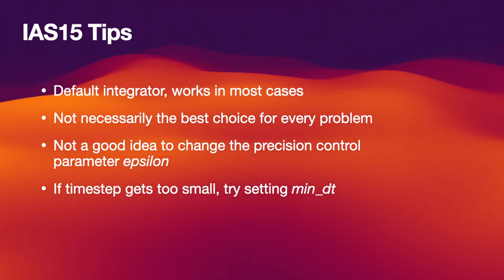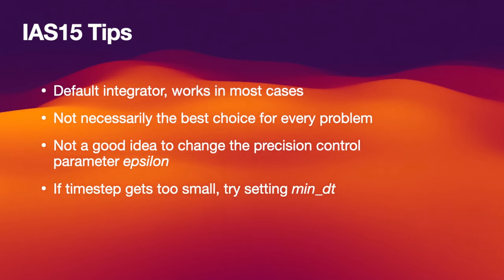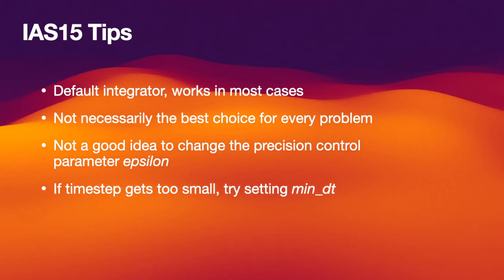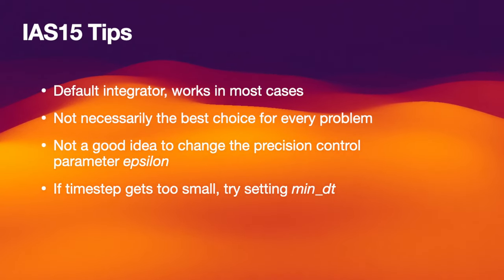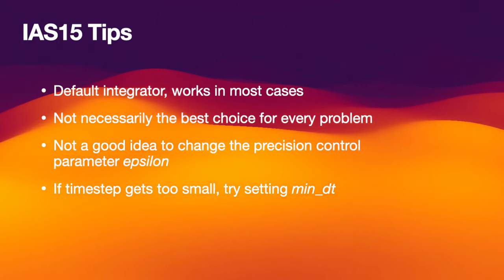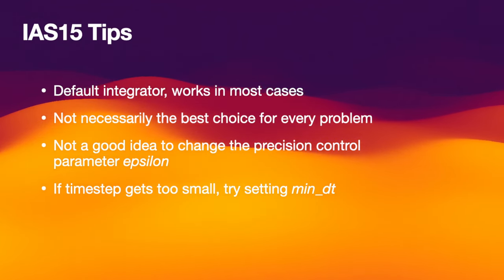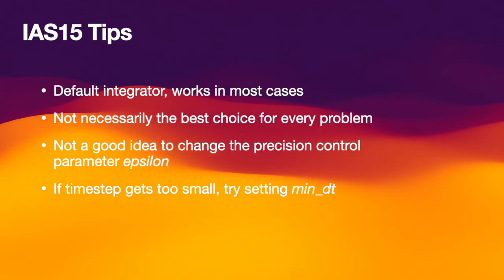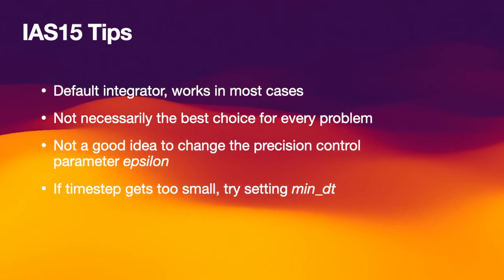One thing to keep in mind is that changing the precision control parameter in Rebound, which is called epsilon for IAS15, is in general not a good idea, for the reason I showed you on the previous slide. If you try to make your simulation 10 times faster, you will not succeed with IAS15. You need to choose a different integrator. There's one other way which you might be able to get around certain issues, namely by setting the minimum time step, minDT.